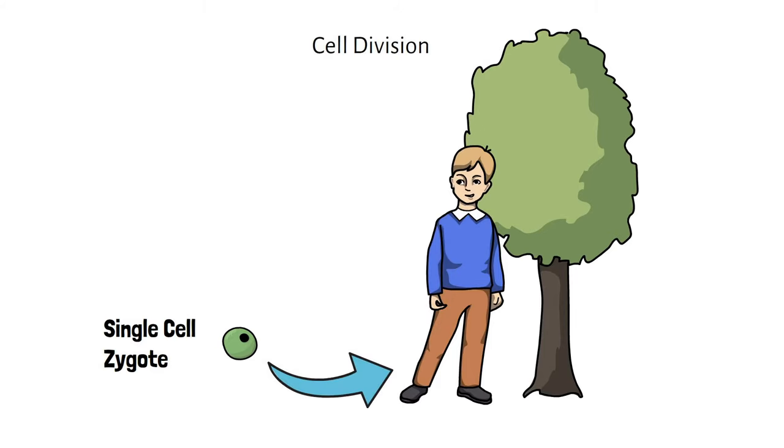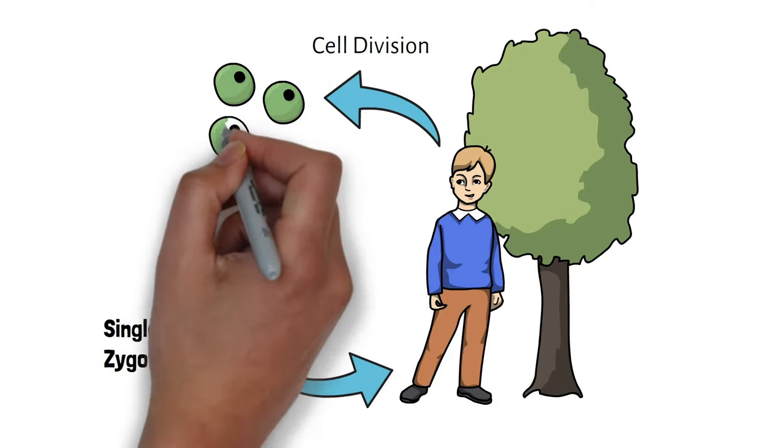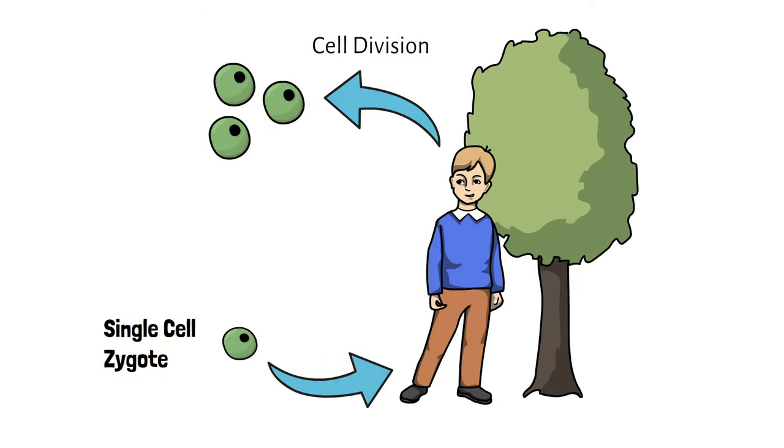Cell division does not stop with the formation of a mature organism but continues in certain tissues throughout life. This enormous output of cells is needed to replace aged and dead cells.